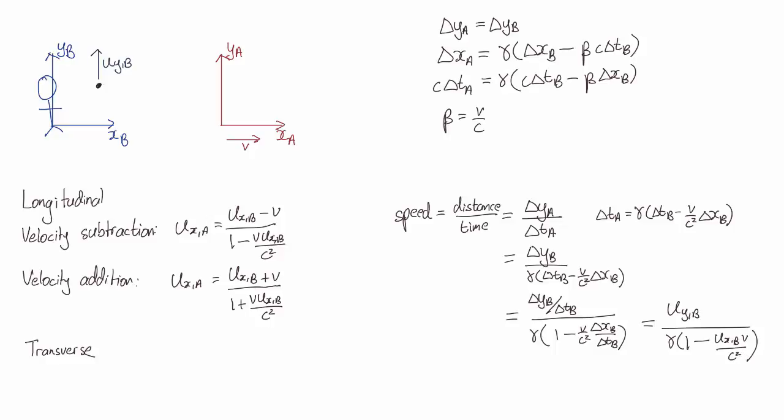And there we have it. So on the numerator we have UyB, the speed in Bob's reference frame, and on the denominator we have two factors.